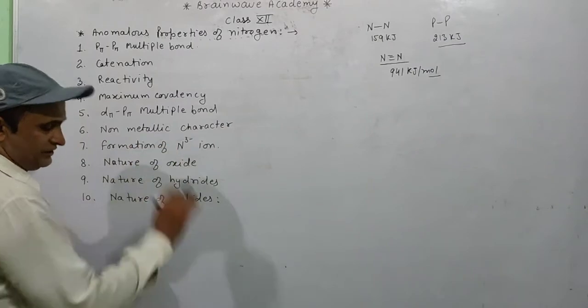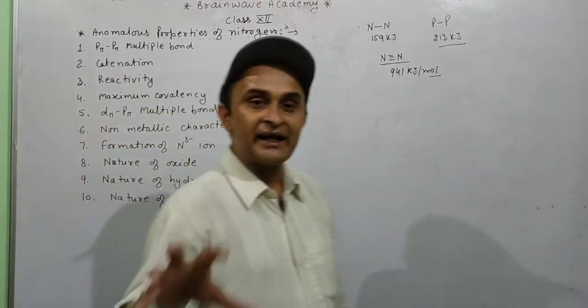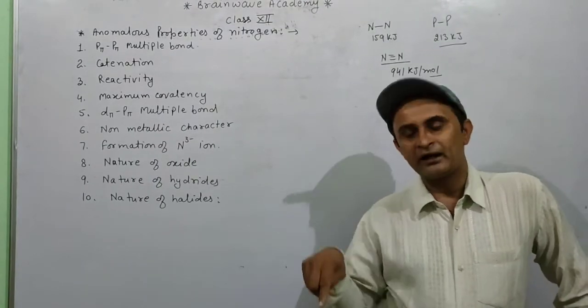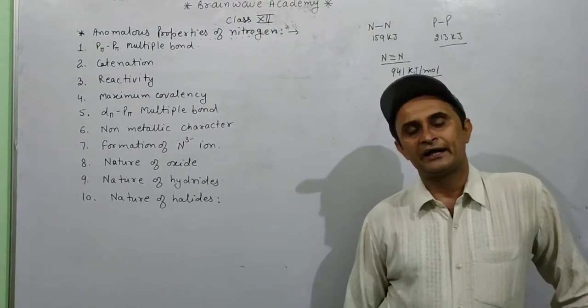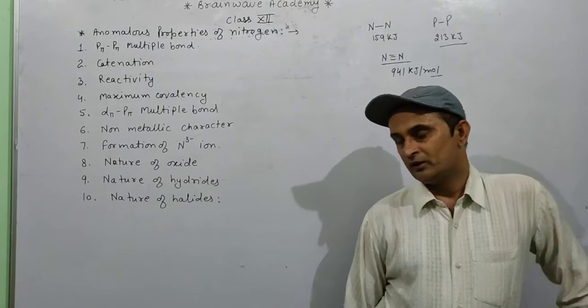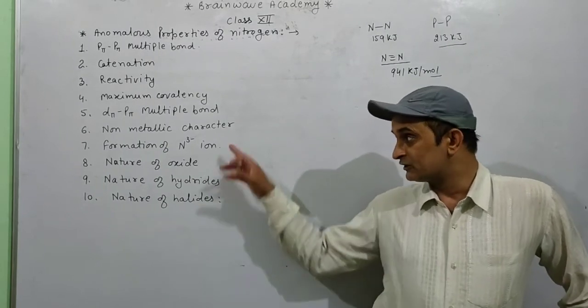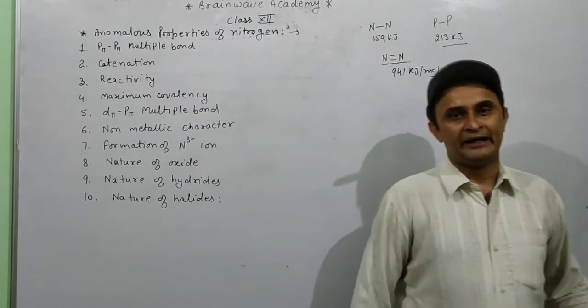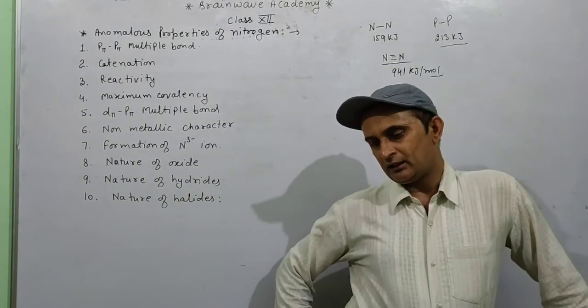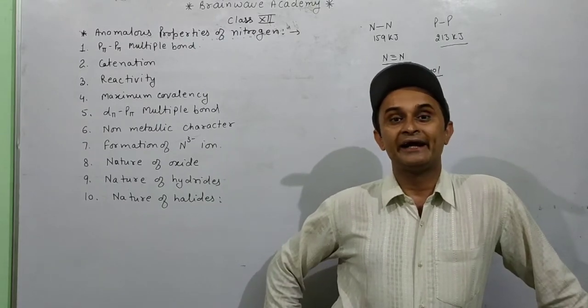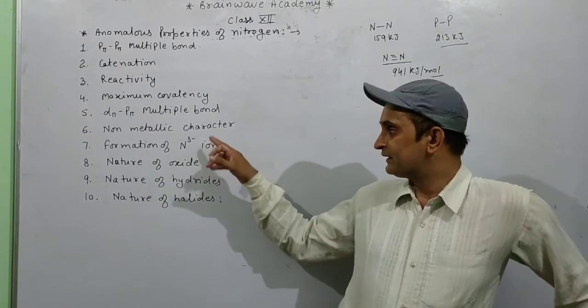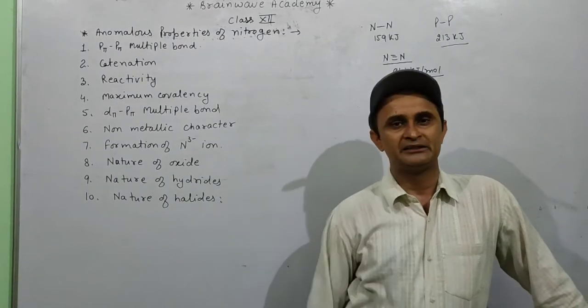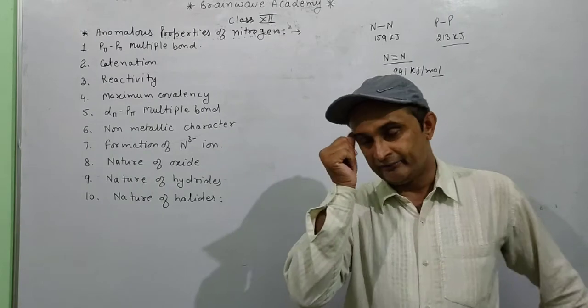Non-metallic in nature: nitrogen has highest non-metallic character. After nitrogen, non-metallic character decreases down the group. Formation of trinegative ion: nitrogen can form trinegative ion N3-. Phosphorus has small tendency, but other members cannot form the trinegative ion.